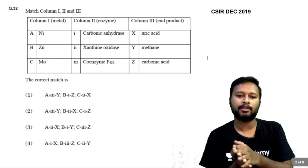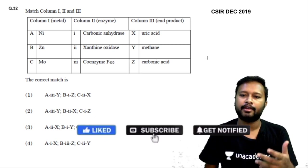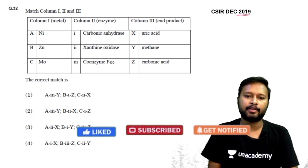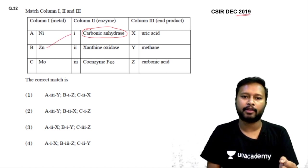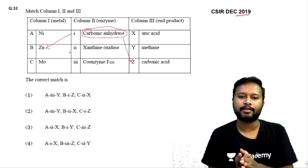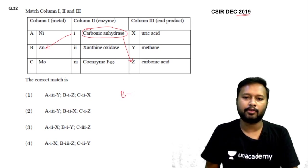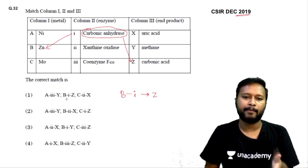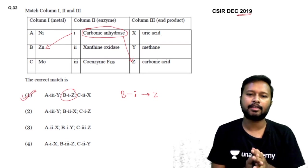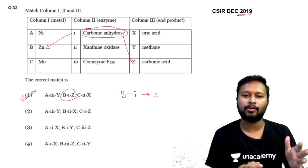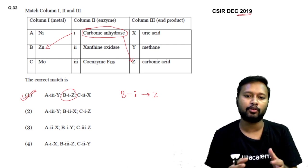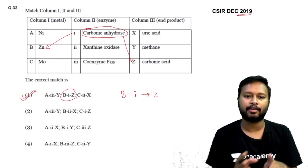A match-the-following question from CSIR December 2019 also involved carbonic anhydrase — you had to match the enzyme with its metal. Zinc is the active metal in carbonic anhydrase. Knowing this, you can match b with 1 and z, giving b1z, which corresponds to option 1. Even without knowing xanthine oxidase and coenzyme F430, knowing carbonic anhydrase alone allows you to answer correctly.